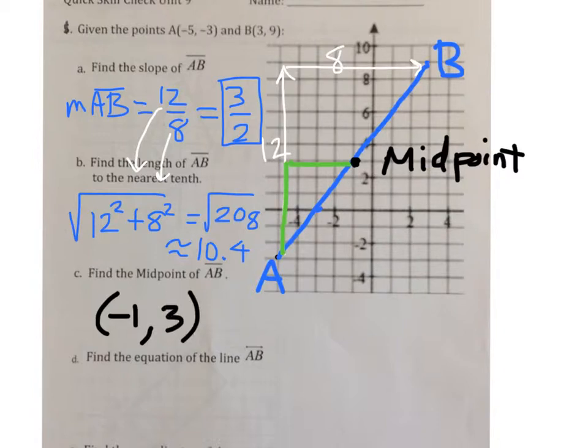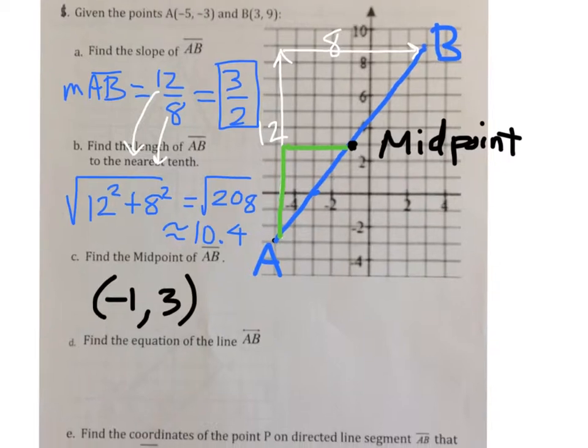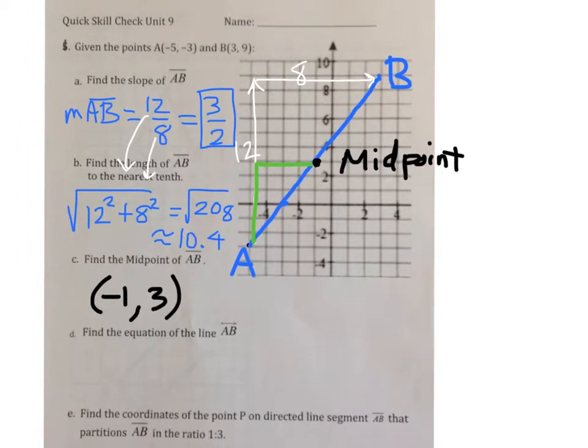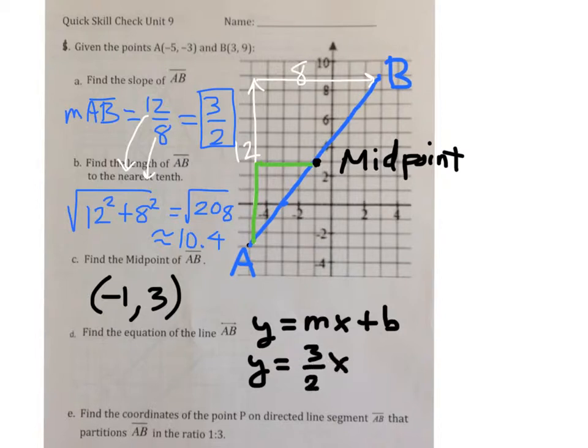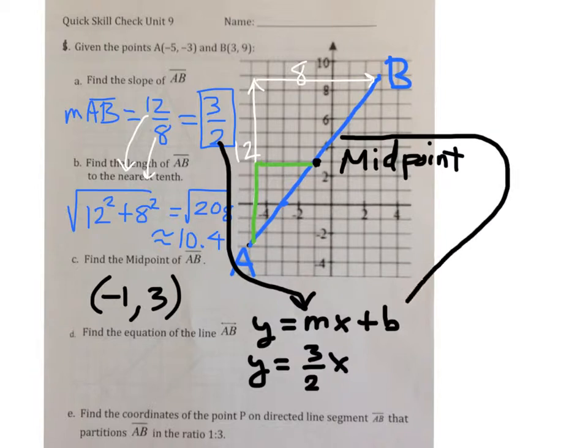To find the equation of a line that would go through A and B, we can rely on the picture to determine what the slope and the y-intercept are. Based on the picture, I would estimate that the line is y equals 3 over 2x, from the slope from question A. And it looks as if the y-intercept is at 4.5.